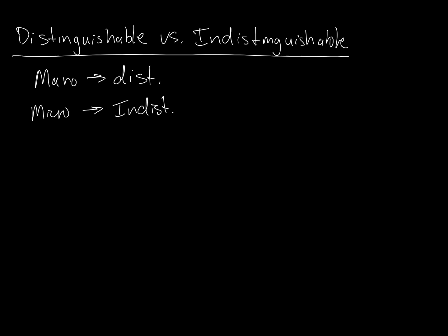On the microscale, particles are indistinguishable. I cannot label an atom. Why can't I label an atom? What is a fundamental foundational principle of quantum mechanics that prevents me from labeling molecules? Heisenberg uncertainty principle.